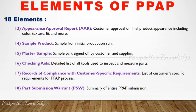The thirteenth element is the Appearance Approval Report (AAR) — customer approval on the final product appearance, including color, texture, fit, and finish. The fourteenth is Master Sample Parts — signed off by both the customer and supplier. The master sample is the most important reference piece. A production partner manufactures a master sample that must match customer requirements for dimension, specification, design, and orientation.